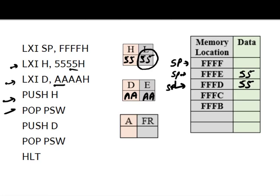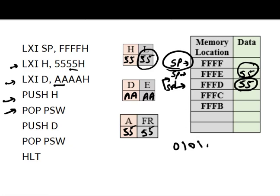Next instruction is POP PSW — PSW is program status word, which is a combination of register A and the flag register. This POP instruction pops the contents from the stack pointer location into register A and the flag register. So the flag register now contains 55, which is 01010101. There are five flags in the 8085, and the flag register is 8 bits wide.